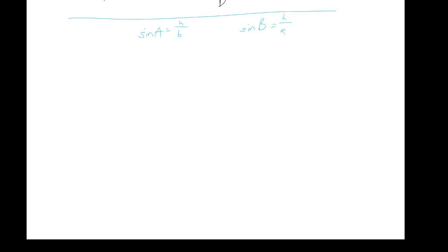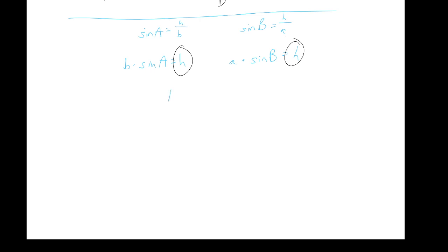Now let's look at this algebraically. If I solve for h, I'd multiply both sides by b, so b times the sine of A equals lowercase h. Similarly, I can multiply by a on both sides, and a times the sine of B equals h. Both of these quantities are equal to h, meaning they are both equal to each other.